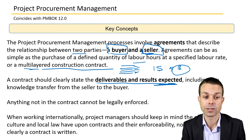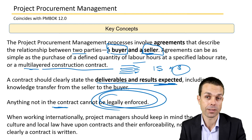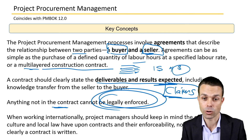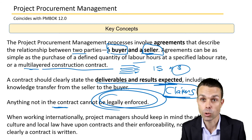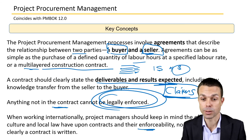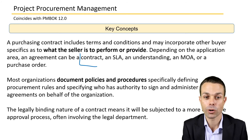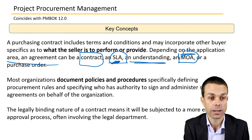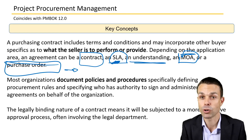A contract should clearly state the deliverables and results expected, including any knowledge transfer at the end from the seller to the buyer. Anything not in the contract cannot be legally enforced, and if parties can't agree on whether something was delivered, that's when we go into the claims management process. When working internationally, project managers should keep in mind the effect of culture and local law on contracts and their enforceability. Agreements can take various forms: a contract, a service level agreement, a memorandum of agreement, or a purchase order.